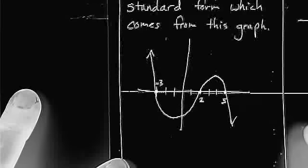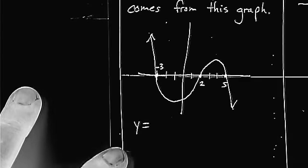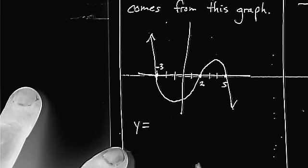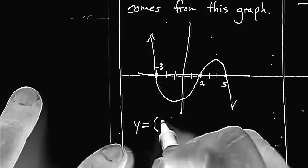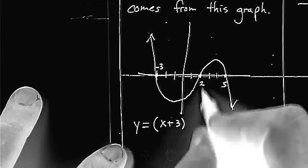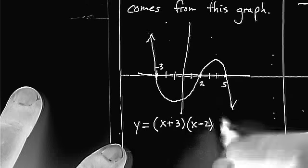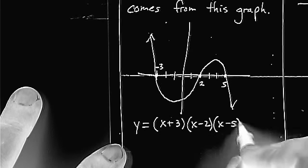positive 2, and positive 5. And if we were to write the factors out for that, since it's a function, we have to have a y value. So we write our factors. From negative 3, we get x plus 3. From positive 2, we get x minus 2. From positive 5, we get x minus 5.